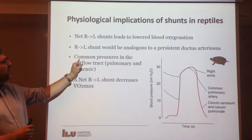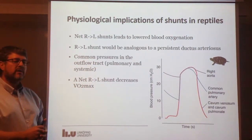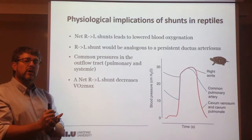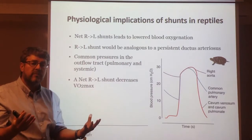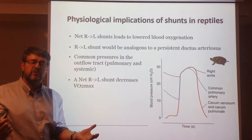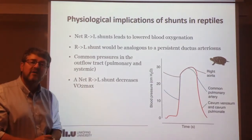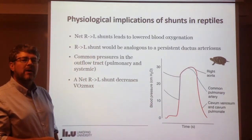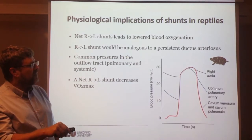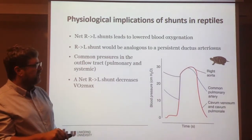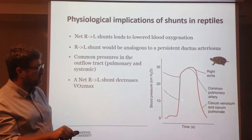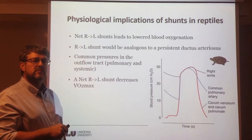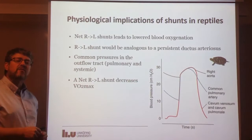Another important effect is the fact that there are common pressures in the outflow tract. Because both sides of the circulation, both outflow tracts, are connected to each other in a single ventricle, it's not possible to develop differential pressures in both sides. That's what happens in mammals and birds — pulmonary pressure is lower than systemic pressure — but that is not the case in turtles. A common measurement of pressure development in the right aorta, the pulmonary artery, or the cavum venosum basically suggests that during systole, all these locations have exactly the same pressure. This is an important detail that may be different in other reptiles, because there are exceptions.